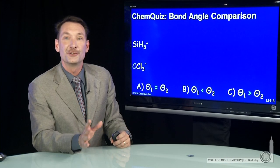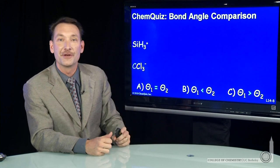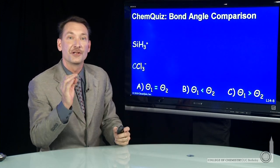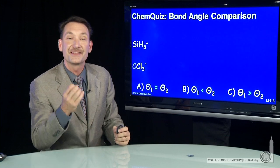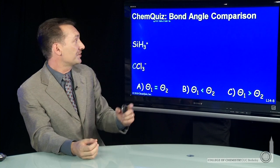We're looking at the bond angles in two molecular ions, SiH3+ and CCl3-. In order to determine bond angles, we have to draw the Lewis electron dot structure to get the steric number to get to a VSEPR arrangement. So let's do that.